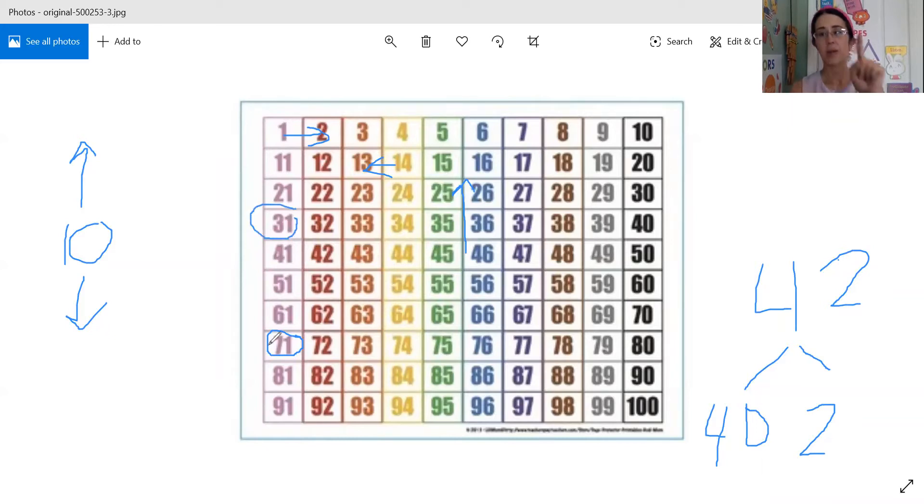71 take away 10 is 61. Take away another 10, 51. Another 10, 41. And our last 10, 31. We have already subtracted the 40. 10, 20, 30, 40. But now we need to subtract 2.